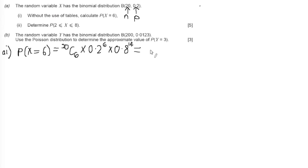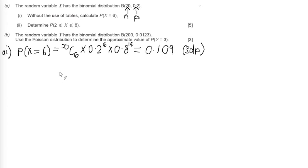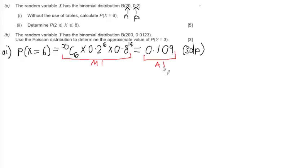When we put this into our calculator and work our way through it, what we get is an answer of 0.109 to 3 decimal places. So how do we get marks in this question? We have a method mark for showing the formula part of our working, and we have an accuracy mark for our final answer rounded correctly.